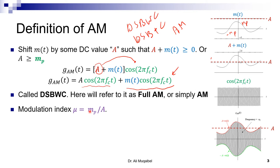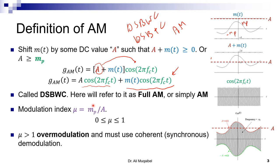We define the modulation index as the ratio MP over A — the peak of the message divided by the DC value added. Since A must be greater than or equal to MP, the maximum value of mu is 1 and the minimum is 0. If mu is greater than 1, it means MP is greater than A, meaning the DC added is not sufficient and the signal can still go negative — this is called overmodulation, which requires coherent or synchronous demodulation.